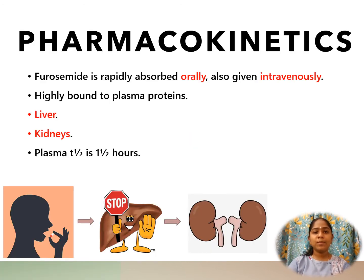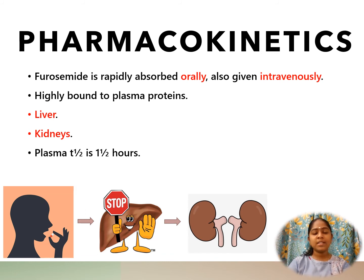Pharmacokinetics — describing absorption, distribution, metabolism, and excretion: Furosemide is rapidly absorbed orally, acts in 20–40 minutes, and can also be given intravenously, where it acts quicker in 2–5 minutes. It is highly bound to plasma proteins, metabolized in the liver, then excreted by the kidneys, with a plasma half-life of 1.5 hours. The maximum duration of action ranges between 4–6 hours.